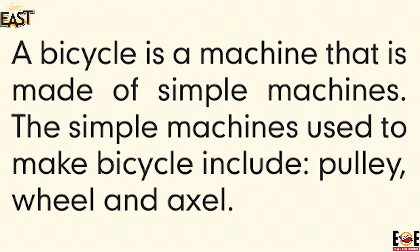Put your finger under the first word. Bicycle — bicycle — bicycle. Now repeat this word with me: bicycle — bicycle. A bicycle is a machine — machine — machine. Repeat: machine — machine. That is made of simple machines. These simple machines used to make a bicycle include — include — include. Repeat: include — include. Pulley — pulley — pulley. Repeat: pulley — pulley. Wheel — wheel — wheel.